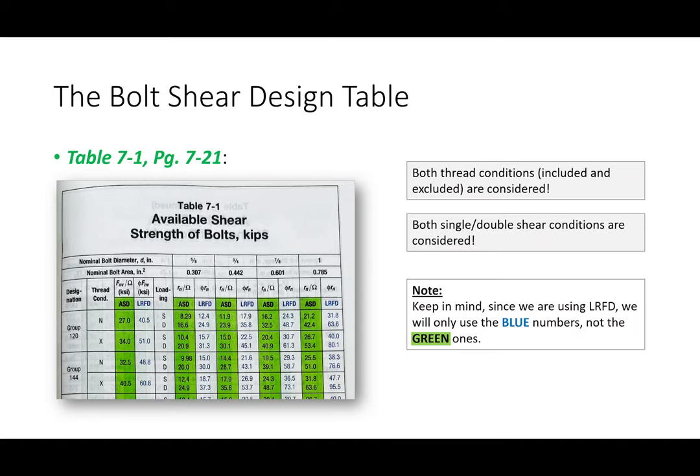This is our first foray into using design aids. We are using blue numbers — not the green shaded numbers. Do not look up any green numbers because we are using LRFD. The table has columnar values corresponding to bolt diameters: this column is for 5/8-inch bolts, this column is for 3/4-inch bolts. Next to 3/4 inch it already shows the bolt area: 0.442 in². The table reports phi × little-r-n per connector. We're in Group 120, threads excluded (X), single shear (S), 3/4 inch — and it gives us 22.5 kips per bolt. You don't need to go through all that computation; the table already did it for you.